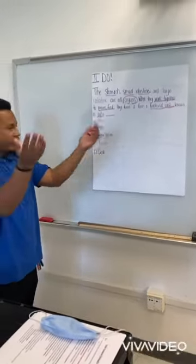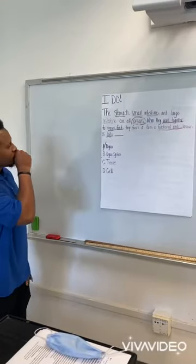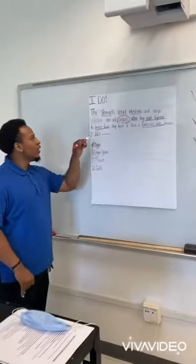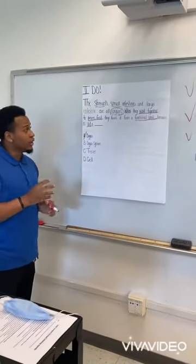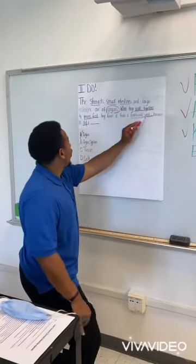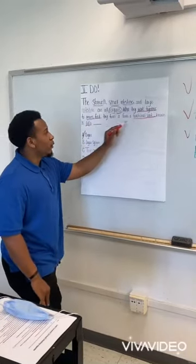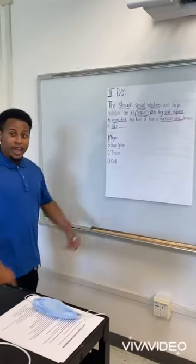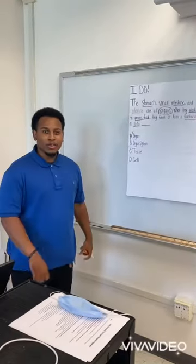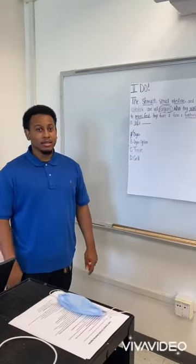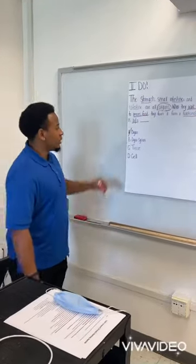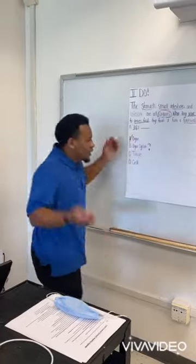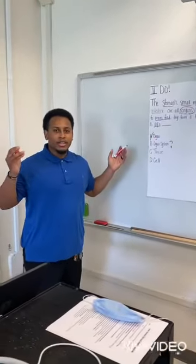B says 'organ systems.' That makes sense because the small intestine, large intestine, and stomach are organs, and it says they work together and form a functional unit. When organs are working together, if you were paying attention to your notes, what do they make? Organ systems. So we're just going to put a question mark there because we still have other answers to check.